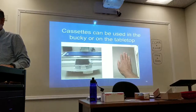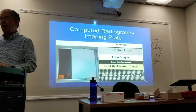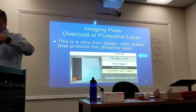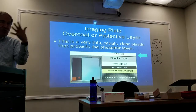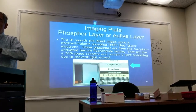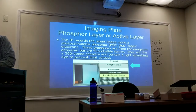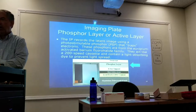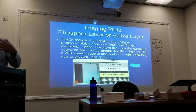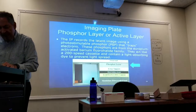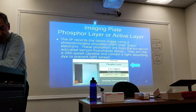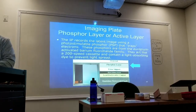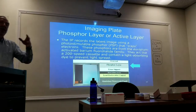The cassettes can be put in a bucket or you can do a tabletop. Let's briefly go over some of the different layers. First you have your protective layer — a plastic coat that protects the phosphors. Then the phosphor layer, which is the key one — this records the image. The image plate phosphors record the latent image using photostimulable phosphors that trap the electrons or create electron holes.